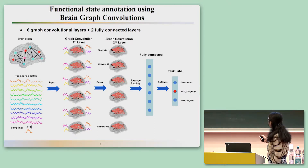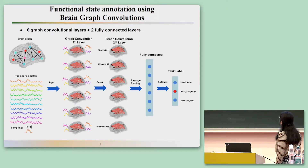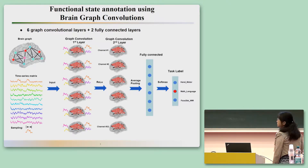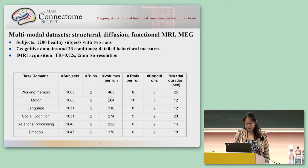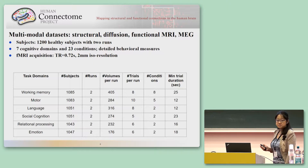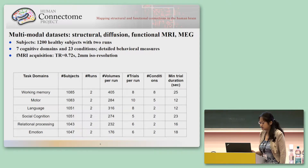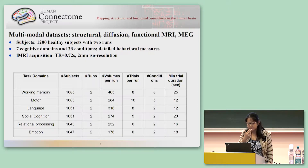The fMRI signal is input into the pipeline and extracted according to task time events — for instance, when a motor task occurs. It then goes through six layers of convolutions, followed by two fully connected layers, and a softmax to predict the task labels. To train this model, we used data from the Human Connectome Project, a large dataset including 1,200 healthy subjects across seven cognitive domains with more than 20 different cognitive task conditions.